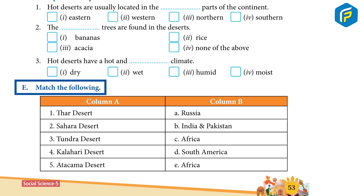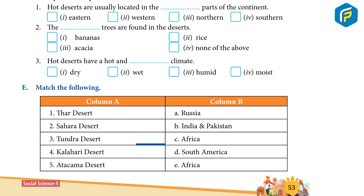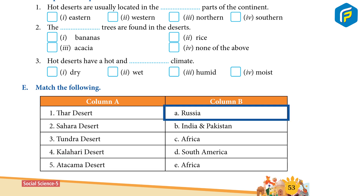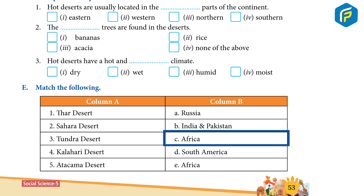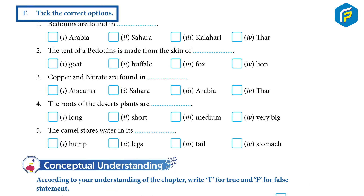E. Match the following. Column A: 1. The Thar Desert, 2. Sahara Desert, 3. Tundra Desert, 4. Kalahari Desert, 5. Atacama Desert. Column B: A. Russia, B. India and Pakistan, C. Africa, D. South America.